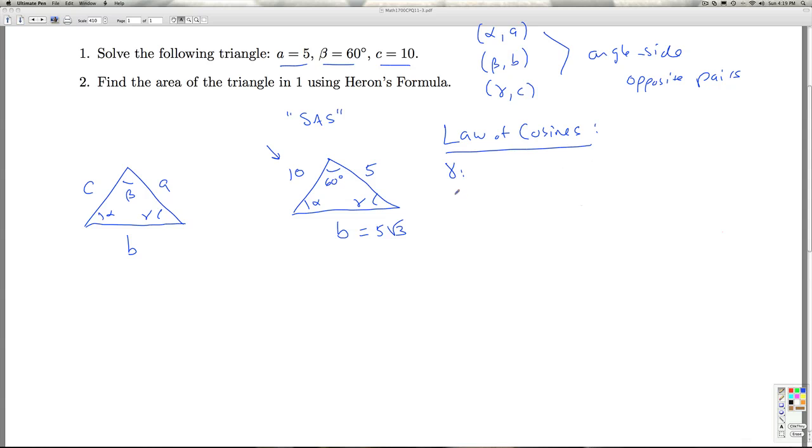Then I can use cosine gamma is equal to the sum of the squares of the adjacent side. So, that would be A squared plus B squared minus the square of the side opposite gamma over 2 times the product of the adjacent sides. So, in this case, I got 5 squared plus 5 radical 3 squared minus 10 squared over 2 times 5 times 5 radical 3.